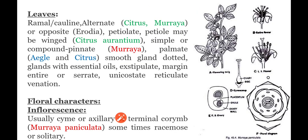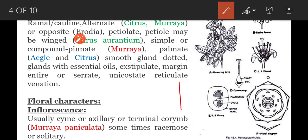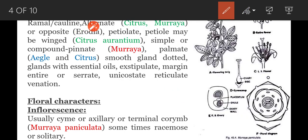Next, vegetative leaves: leaves may be ramal or cauline. Ramal means leaves are present on the branches. Cauline means leaves are directly produced on the stem — if leaves are directly developed on the stem, they are called cauline. Next, phyllotaxy is alternate — one leaf is present on one node and another leaf is present on the node above; such phyllotaxy is called alternate. Example: Citrus and Murraya.